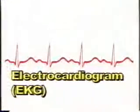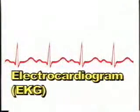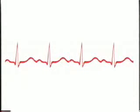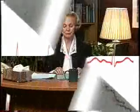The heart has a specialized conduction system that's responsible for the initiation and maintenance of the heartbeat. An electrocardiogram, sometimes just called an EKG, records the heart's electrical activity on a graph for analysis by health care professionals. Through the EKG, disturbances in the normal conduction system may identify some heart disease.